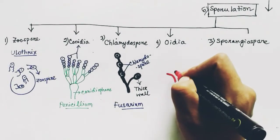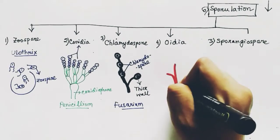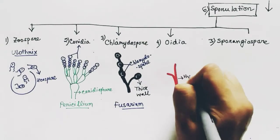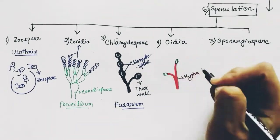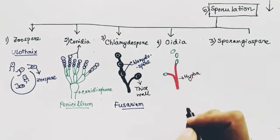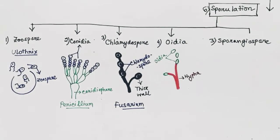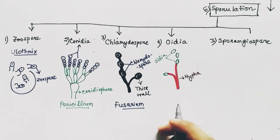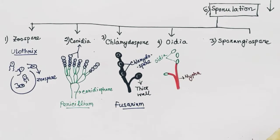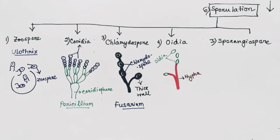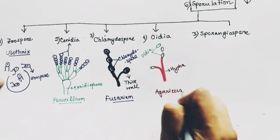The fourth type of spore is oidea. In this type, a hypha is present which holds the spores. These spores are the oidea, which are connected to the hypha of the organism. This kind of spore is found in different organisms such as Agaricus.